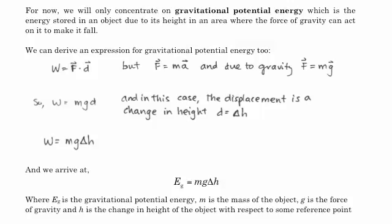And so this type of work we are going to define as potential energy, gravitational potential energy. m is of course the mass of the object, g is the acceleration due to gravity, and delta h is the change in height with respect to some reference point.